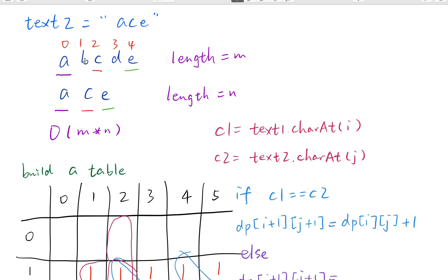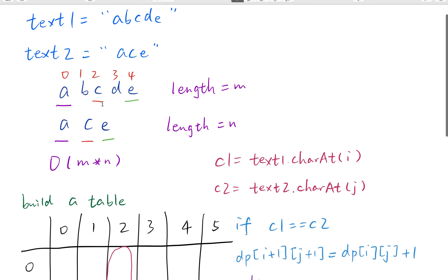So when we see the index from 0 to 2 in text1 and index 0 to 1 in text2, which cell should we look up? Actually it's DP[3][2]. Because we actually make it one larger. If it's the index from 0 to 3 we will check index 4 in the DP array.